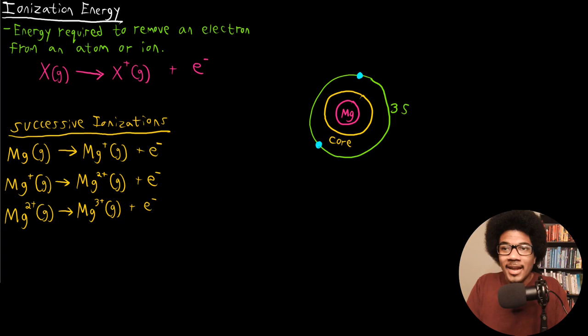In this video, we're going to discuss ionization energies. Ionization energies are basically the energies that are required to remove an electron from an atom or an ion.